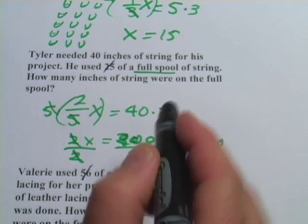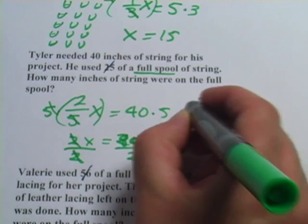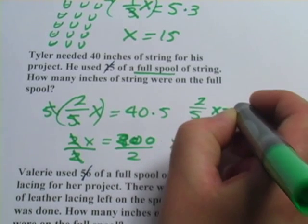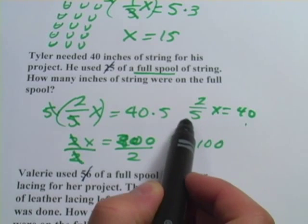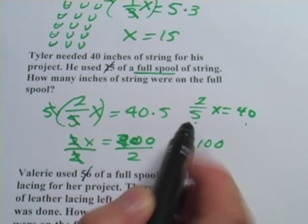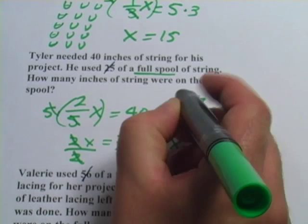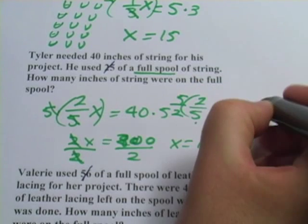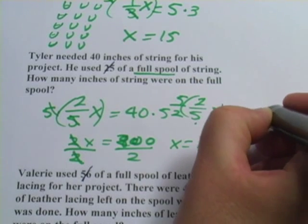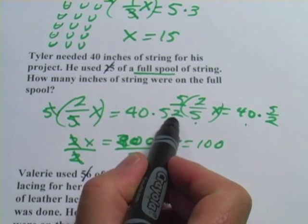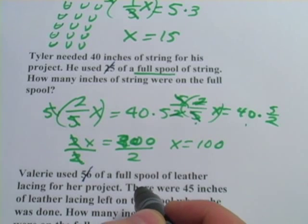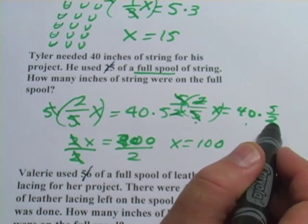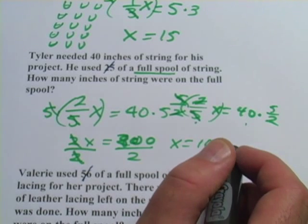Another way to think about that, if we go back to our original equation, two-fifths X equals 40, is that you can multiply both sides by the reciprocal of this fraction. So just take that fraction and flip it upside down. That would do the same thing in one step. So since this was two-fifths, I multiply it by five halves. The fives cancel. The twos cancel. You just get X. And then it would be 40 times 5 divided by 2. That's going to be 100.